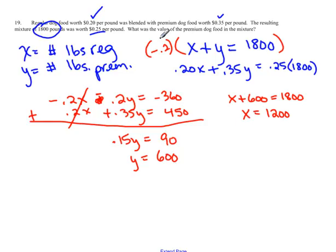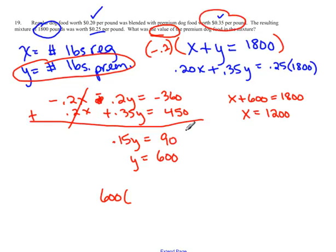Well, let's answer the question. This one's slightly different, because it says, what's the value of the premium dog food? Well, premium is the y value, and the value of it would be how many pounds, which is what we said y was, 600, times how much is it per pound? 0.35, 35 cents per pound, and when you multiply that out, you get 210 dollars. So, the value of the premium dog food in the mixture, since they're 600 pounds at 35 cents per pound, is 210 dollars.